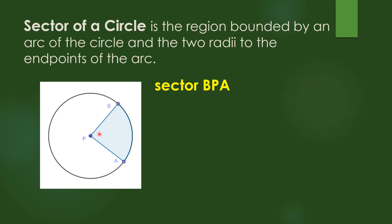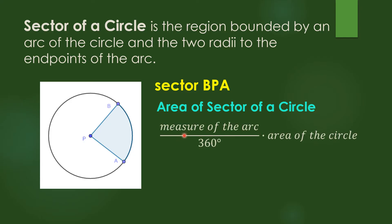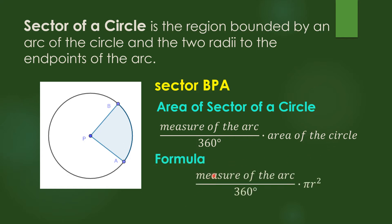We name this sector as sector BPA. So, how do we find the area of a sector of a circle? We will be using the formula: measure of the arc over 360 degrees, times the area of the circle. In formula form, it is measure of arc over 360 degrees times pi r squared.